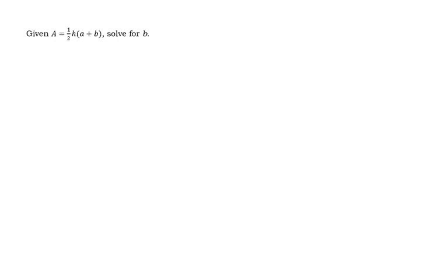Hi everyone, for this video we're going to look at how to solve for a particular variable. We're given this equation A = (1/2)h(a + b), and we're solving for b. There are a few different ways you can do this.